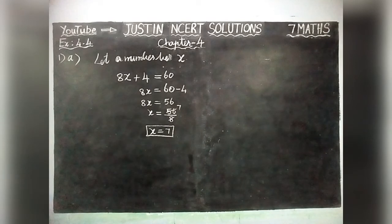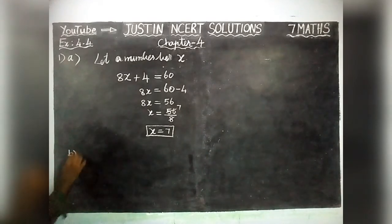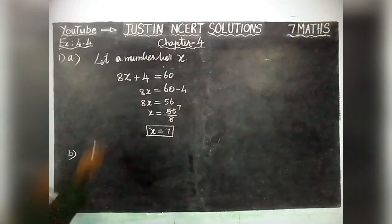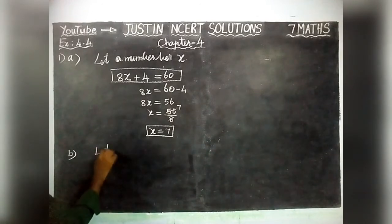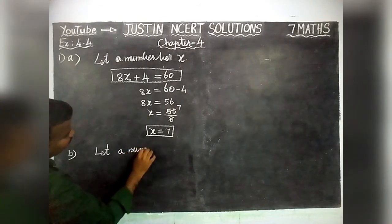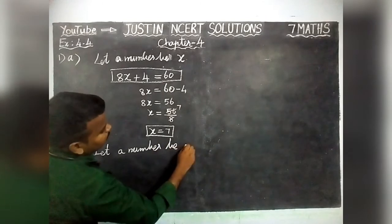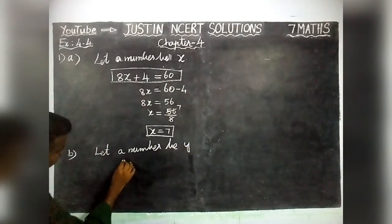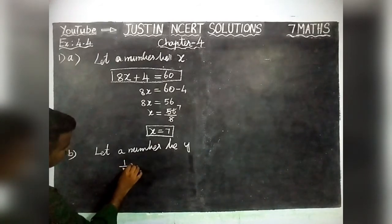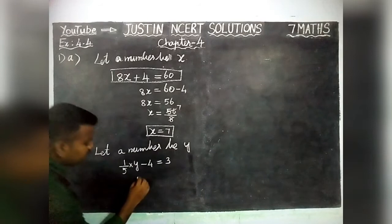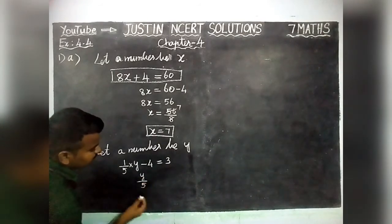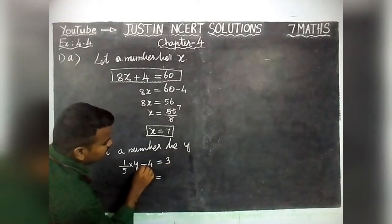The value of X is equal to 7. Now we solve Part B: 1/5th of a number minus 4 gives 3. Let the unknown number be Y. One-fifth of a number can be written as Y by 5. So the equation is: Y/5 minus 4 equals 3. Taking minus 4 to the right hand side it becomes plus 4, so Y/5 = 3 + 4.